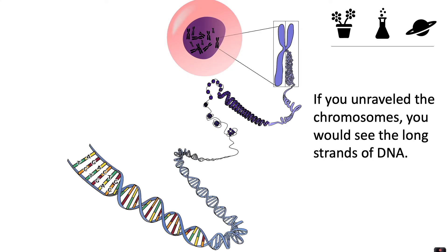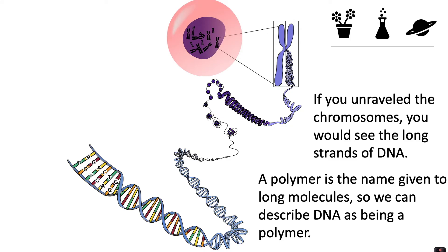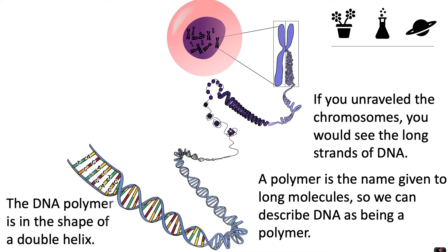If you unraveled the chromosomes you would see the long strands of DNA. A polymer is the name given to long molecules, so we can describe DNA as being a polymer — you might see that word in other topics you learn about; it just means a very long molecule. The DNA polymer is in the shape of a double helix, with two strands wound around each other.